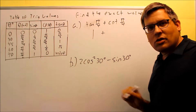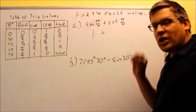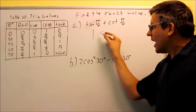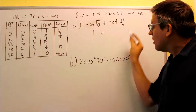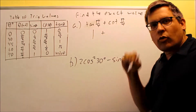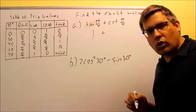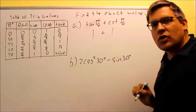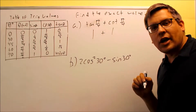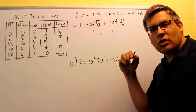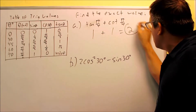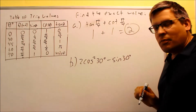For cotangent, we talked about before that cotangent is the reciprocal of tangent. So if we already have the value for tangent, taking the reciprocal gives us the value for cotangent. Tangent is 1 over 1, and the reciprocal of that is still 1 over 1. So cotangent of π/4 is also equal to 1. Adding them together, the exact value for the whole problem is going to be 2.